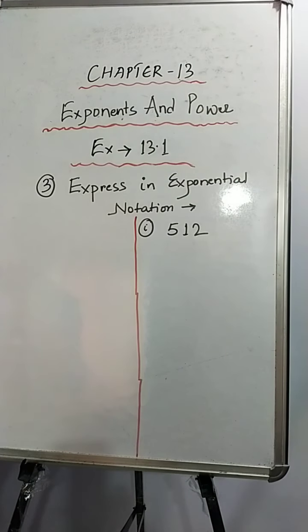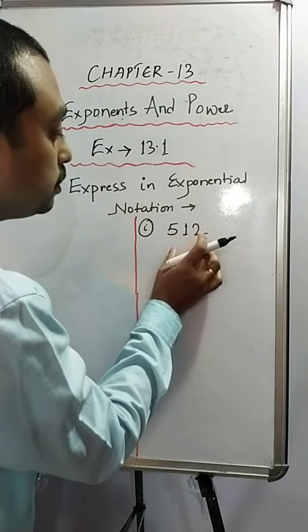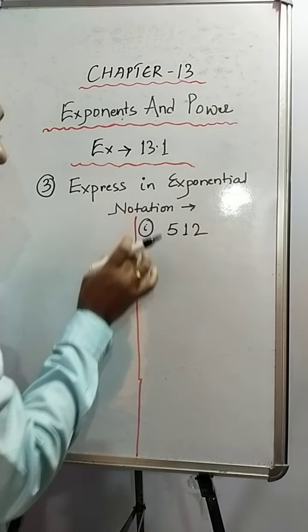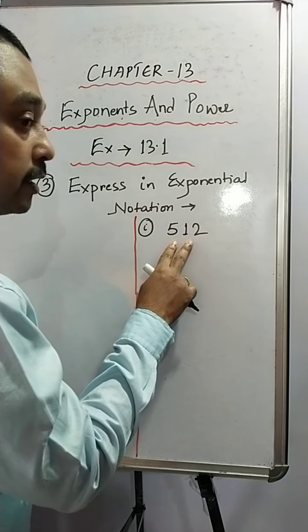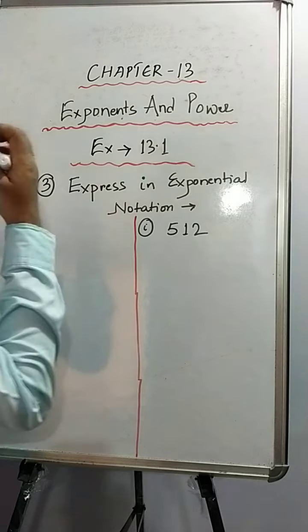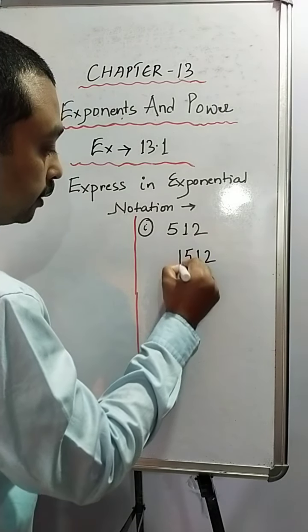Okay, so now let's do. Now how to convert this particular number into the exponential notation? For that, the first thing that you have to do is you have to do the prime factorization of the required number. So we have 512, so the first thing we will do is we will do the prime factorization.